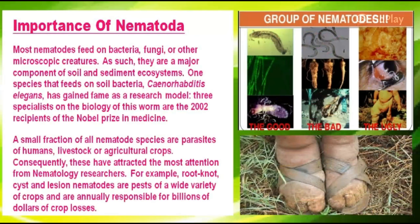Most nematodes feed on bacteria, fungi, or other microscopic creatures, making them major components of soil and sediment ecosystems. One species that feeds on soil bacteria has gained fame as a research model; three specialists on the biology of this phylum were the 2002 recipients of the Nobel Prize in Medicine. A small fraction of all nematode species are parasites of humans, livestock, and agricultural crops. Root-knot, cyst, and lesion nematodes are pests of a worldwide variety of crops and are responsible for billions of dollars in crop losses.